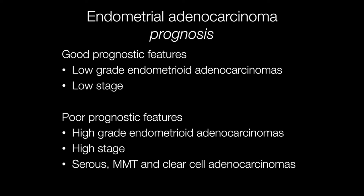To summarise the prognostic features of endometrial adenocarcinomas: good prognostic features are low-stage and low-grade endometrioid adenocarcinomas. Poor prognostic features include high-grade endometrioid adenocarcinomas, high-stage endometrial carcinomas, serous adenocarcinomas, carcinosarcomas or MMTs, and clear cell adenocarcinomas, all of which are associated with worse prognosis.